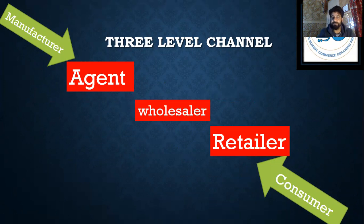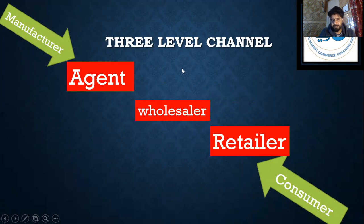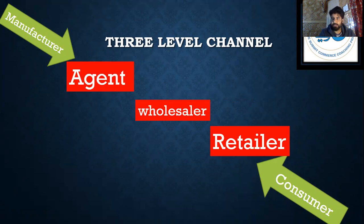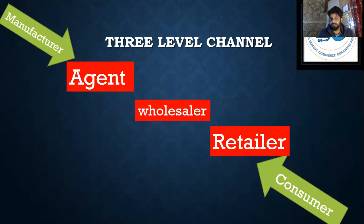It was a very easy topic. The channel of distribution is a path or route along which the goods are moved from the manufacturer to the consumer, through agents, wholesalers, and retailers. Zero level channel is direct marketing; one level, two level, and three level channels are indirect marketing. I hope it was a very easy topic. Till then, bye bye, thank you.